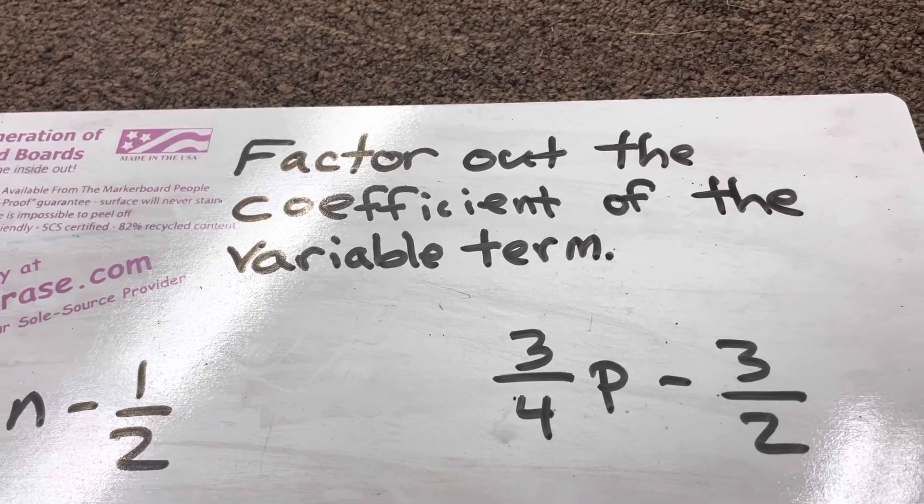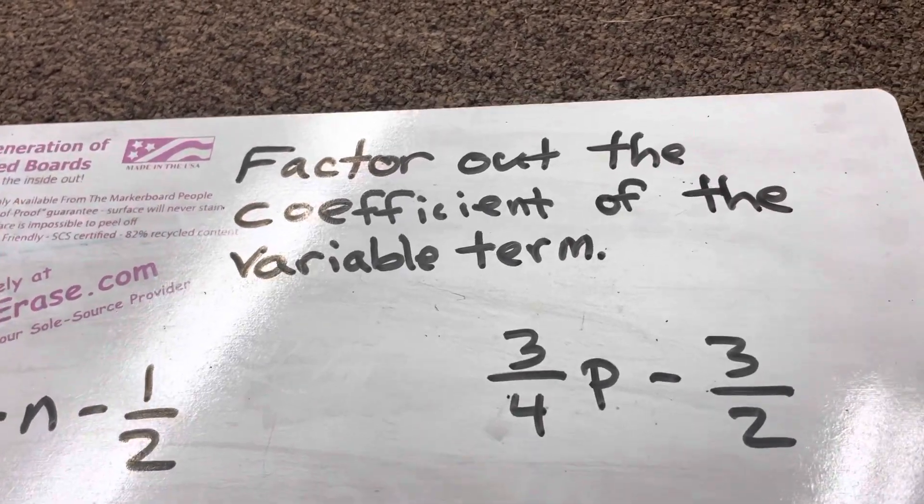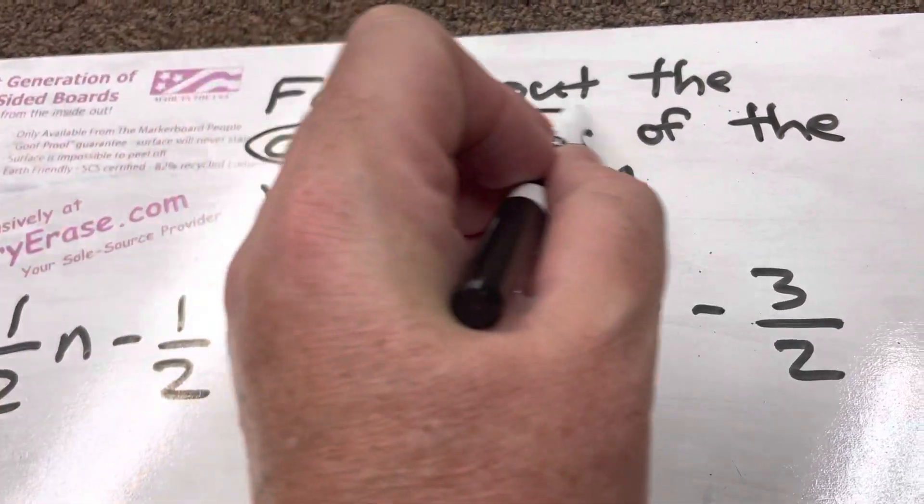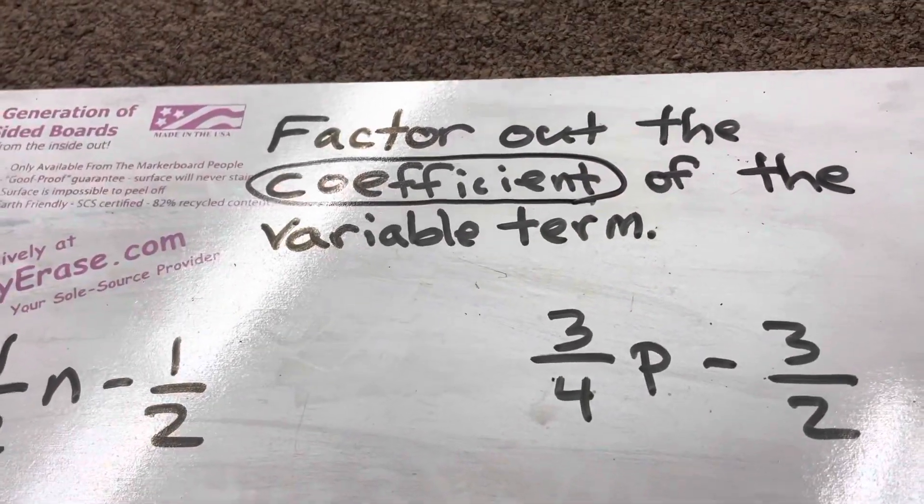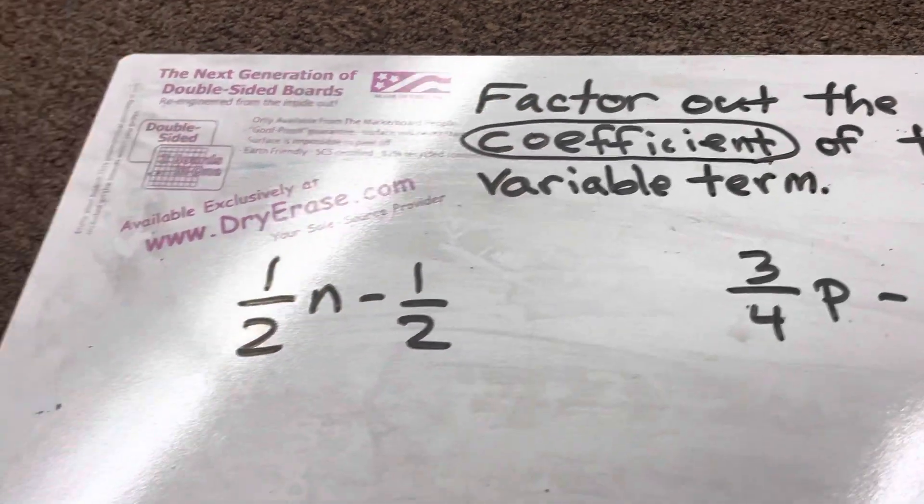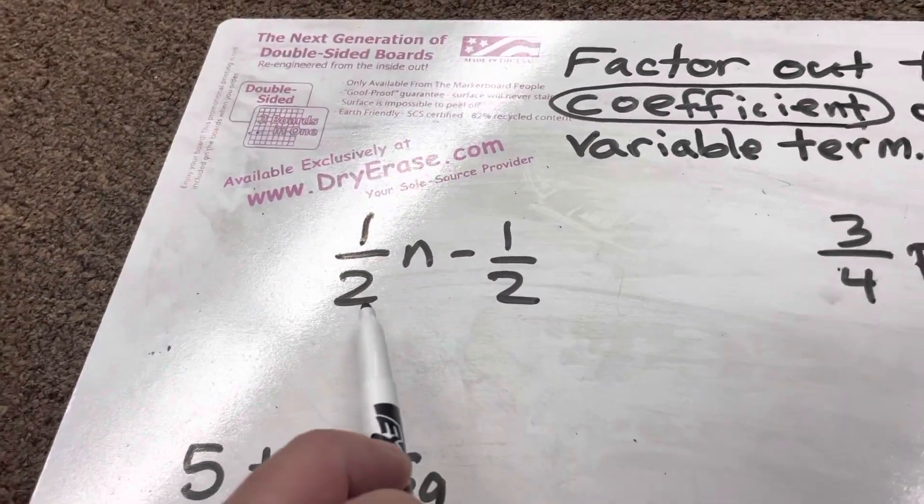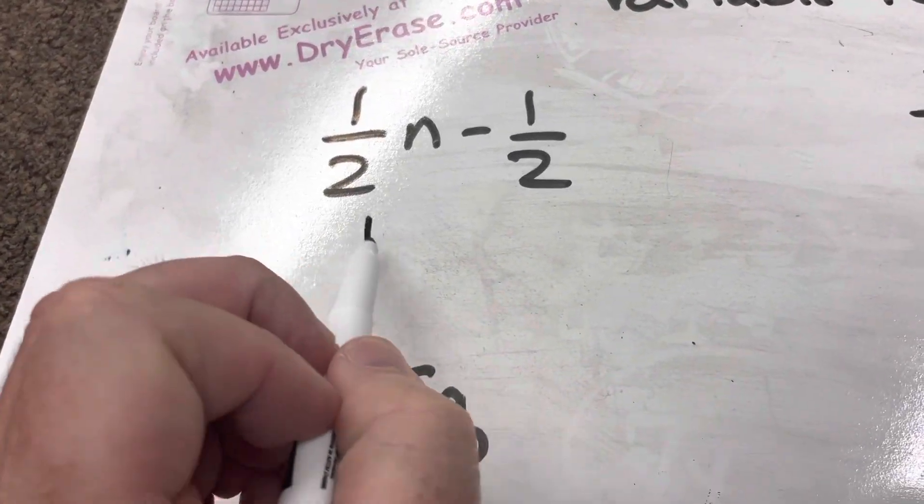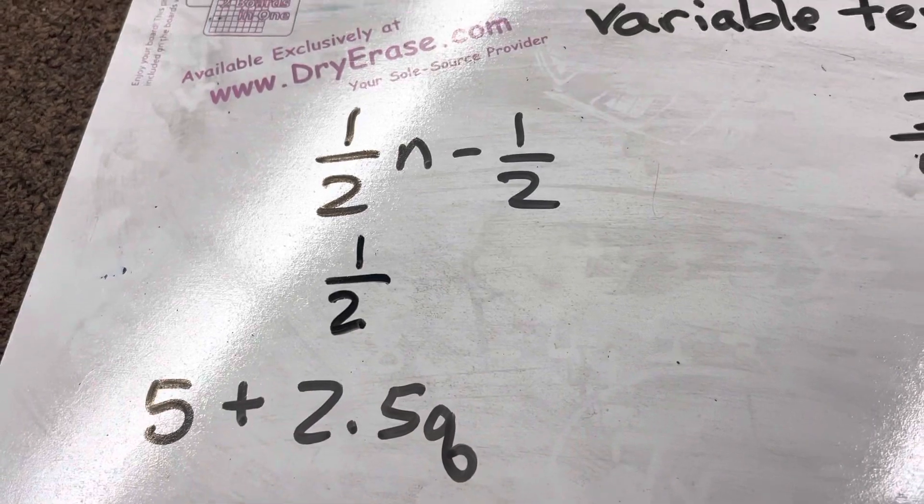Factor out the coefficient of the variable term. We need to make sure you understand what this word means, the coefficient. The coefficient is the number that's connected with the variable. So in this case, one-half n minus one-half, the coefficient is one-half.